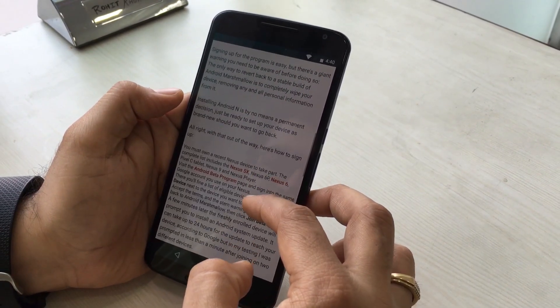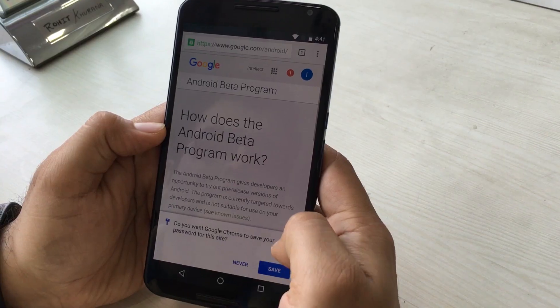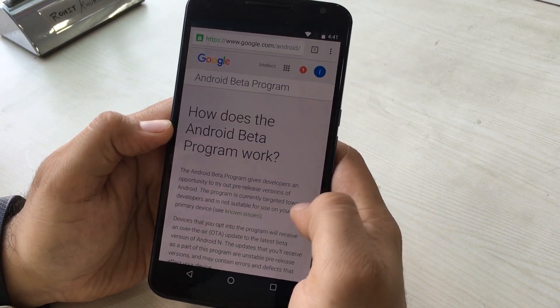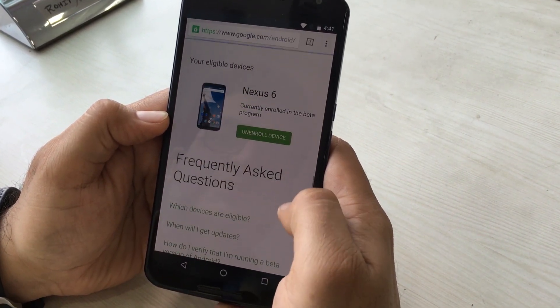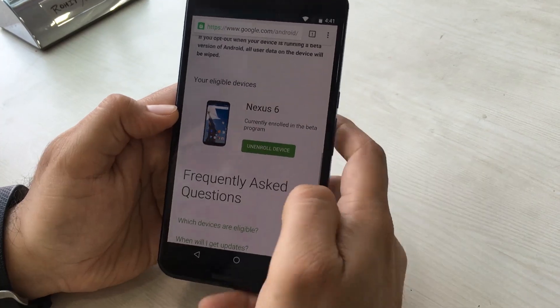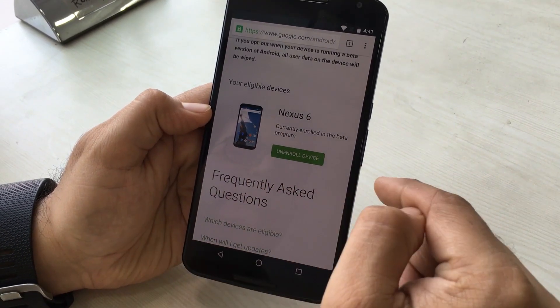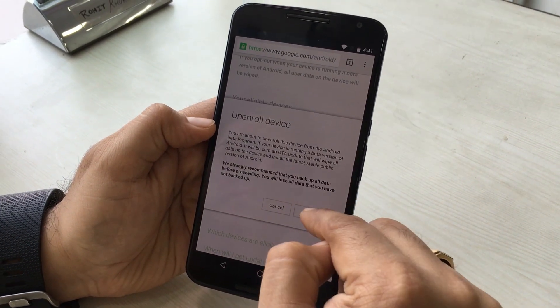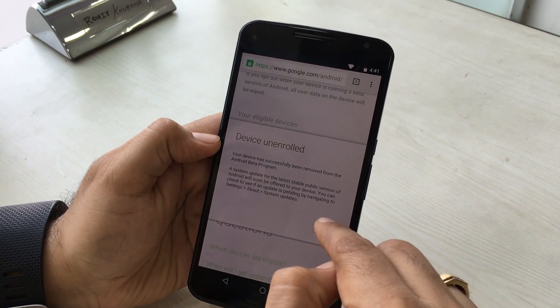If you find this process too cumbersome, there is also a simpler way. Just go to this Android beta tester link in the description section below where you can sign up with the same Gmail ID with which you have signed in to your Android device. Once you do that, you will see the list of eligible devices there.